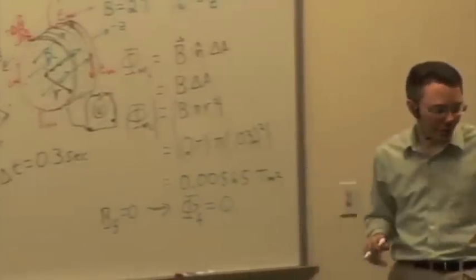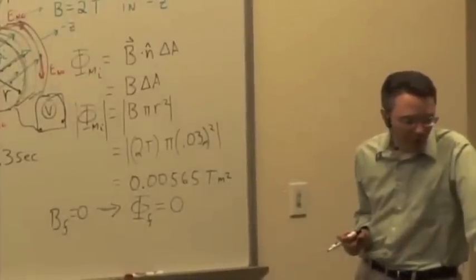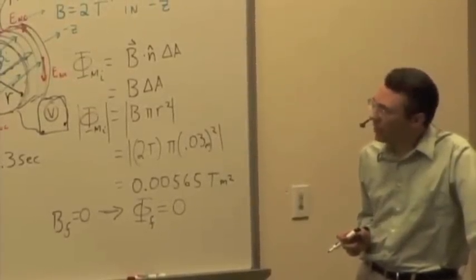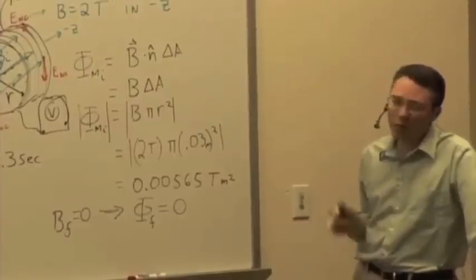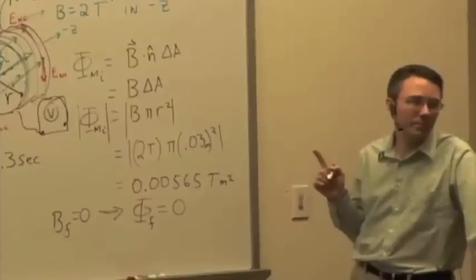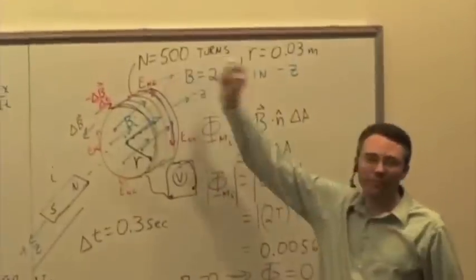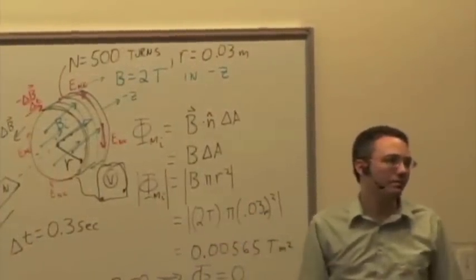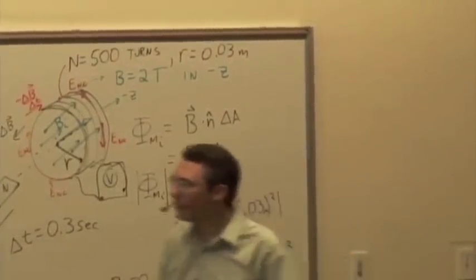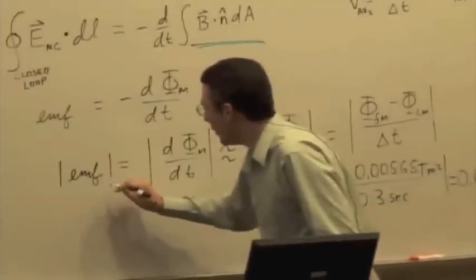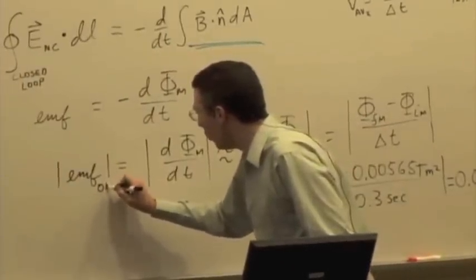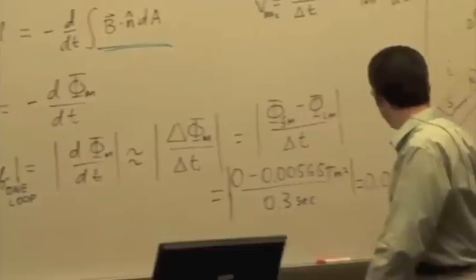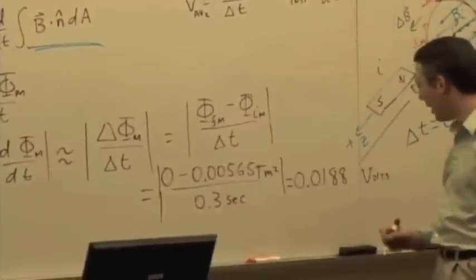Now there's a bit of an issue because we found the flux through essentially one loop, right? But how many loops do we have? So what do we have to do to find the total EMF in the coil? Multiply by 500. So just be careful of this. This is the EMF of one loop.